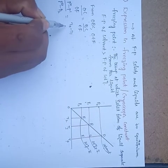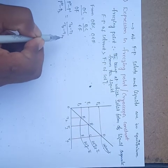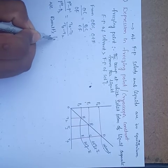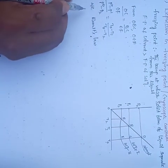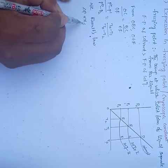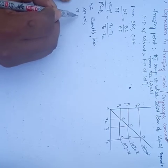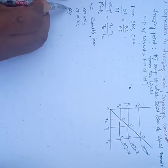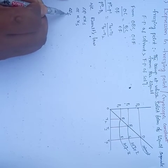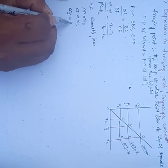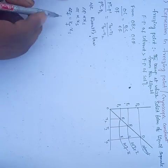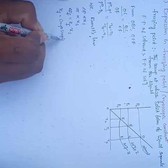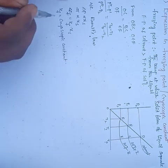From similar triangles: (P0 minus P1)/(P0 minus P2) equals (T0 minus T1)/(T0 minus T2). According to Raoult's law, change in pressure is directly proportional to mole fraction of the solute, and similarly change in temperature is also directly proportional to mole fraction of the solute.